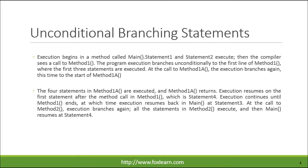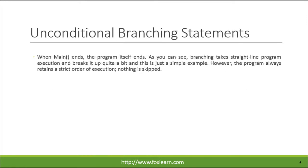At the call to method2, execution branches again. All the statements in method2 execute, and then main resumes at statement4. When main ends, the program itself ends. As you can see, branching takes straight-line program execution and breaks it up quite a bit, and this is just a simple example. However, the program always retains a strict order of execution — nothing is skipped.